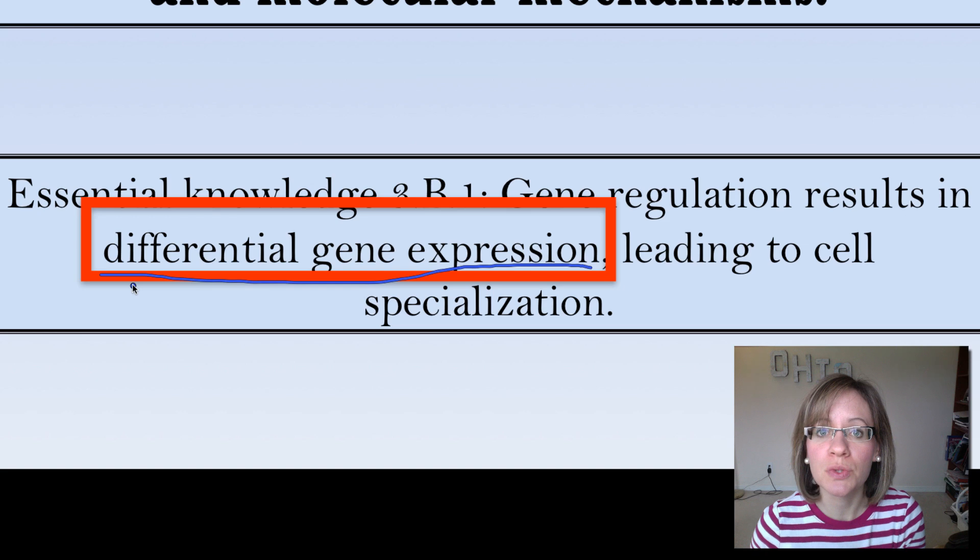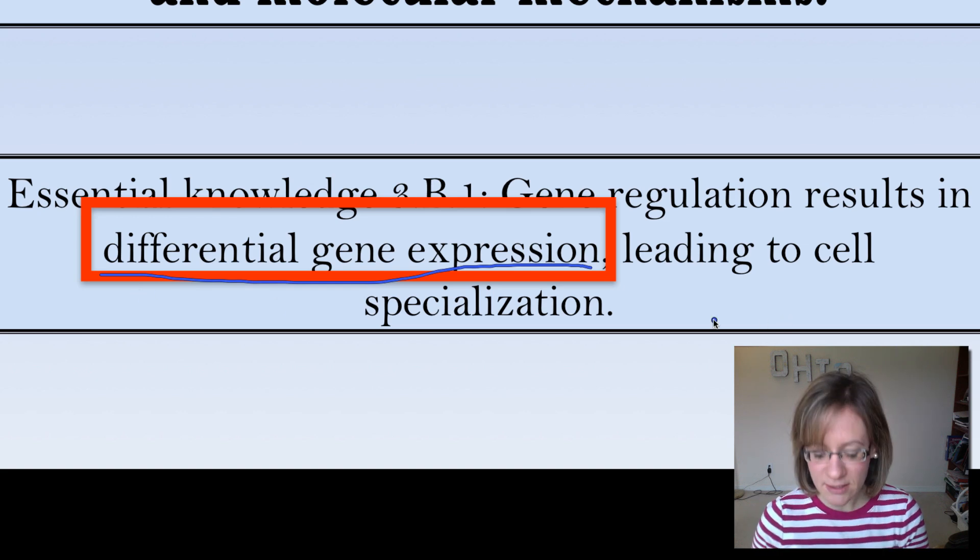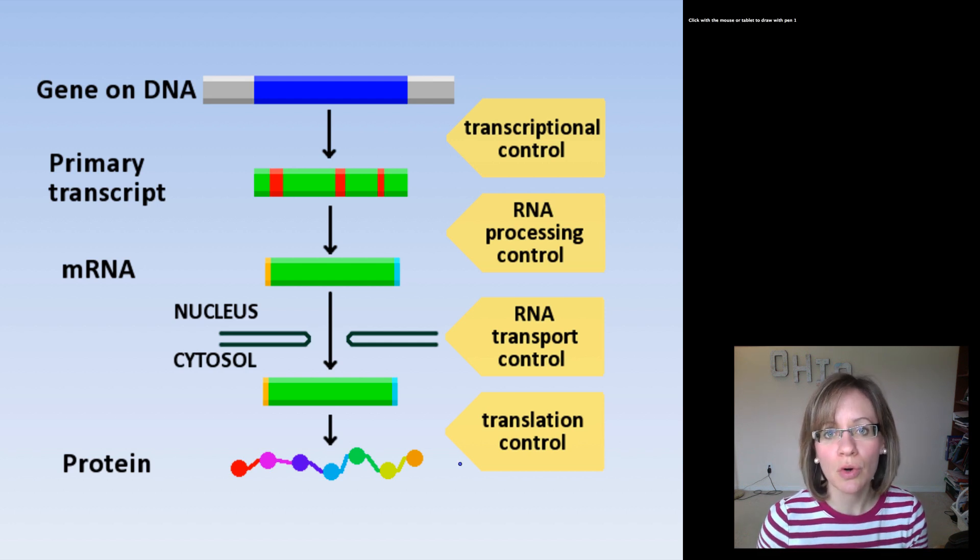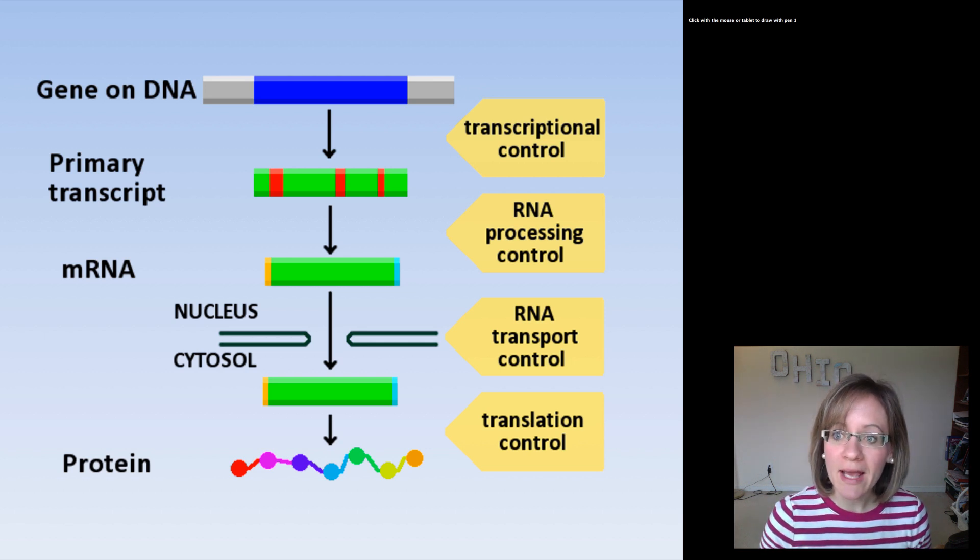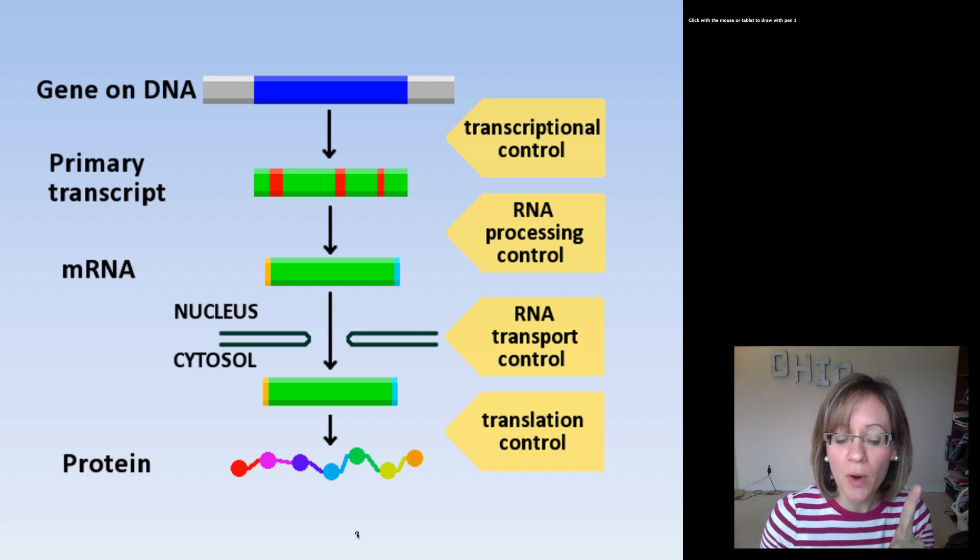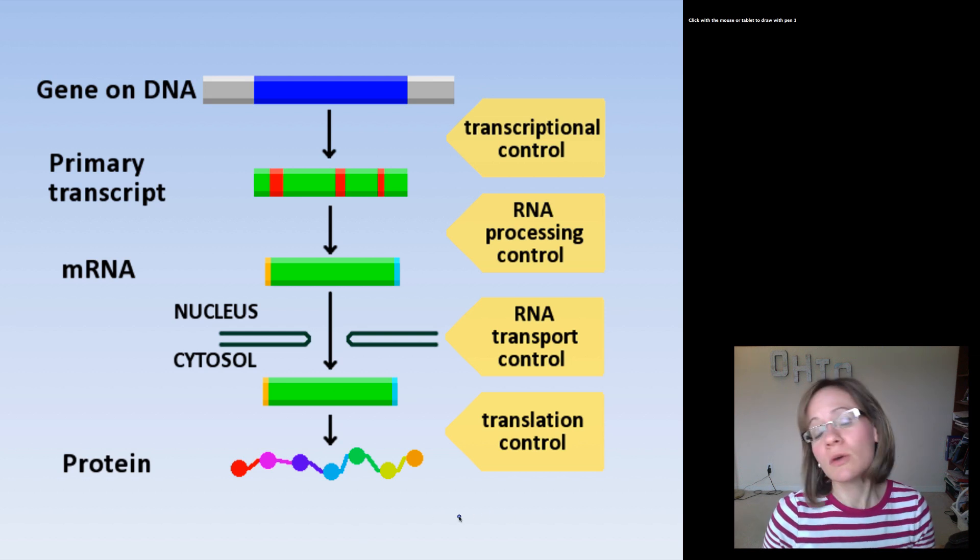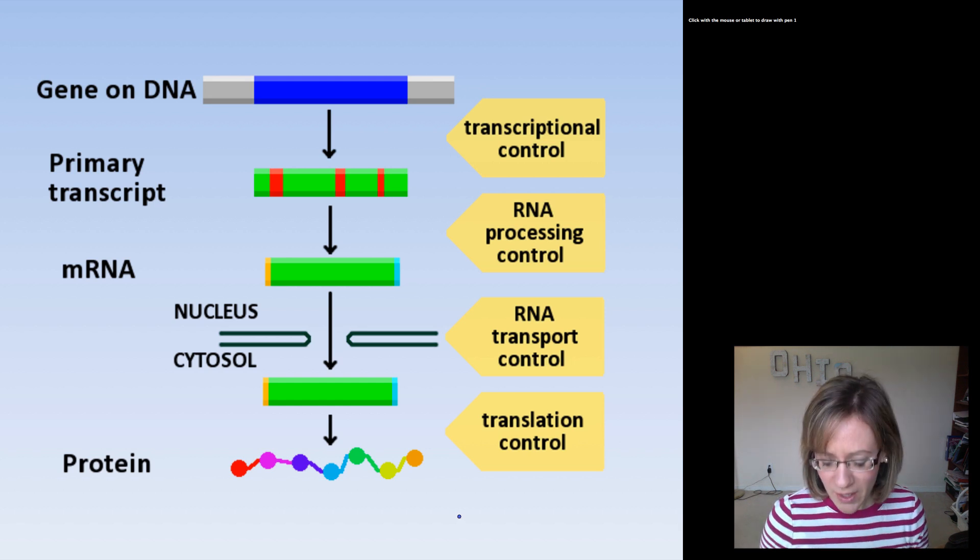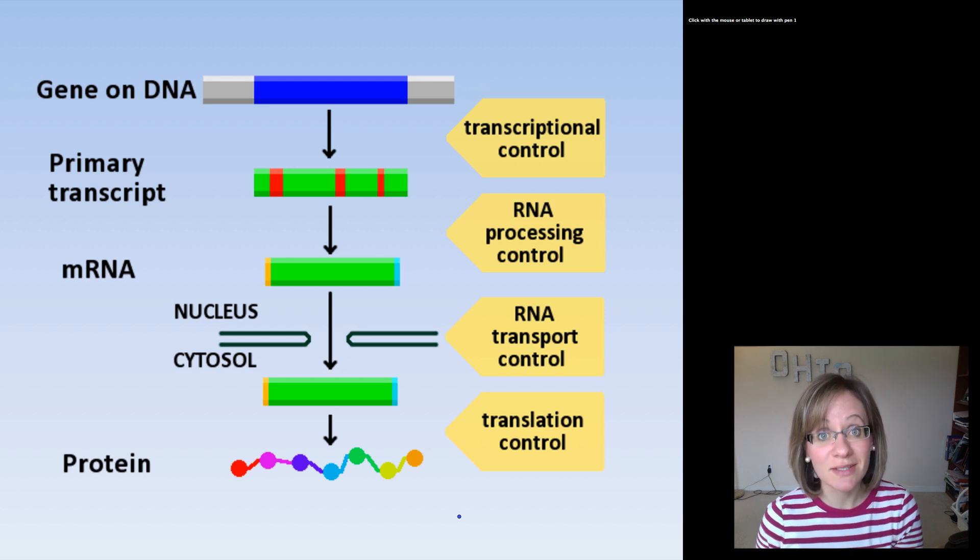Which genes get transcribed and which ones do not, this leads down the line to cell specialization. So there are all sorts of ways and levels at which eukaryotes can control gene expression. You can control it right away at the transcription level, regulating what gets transcribed. You can regulate exon shuffling, so you can regulate what you determine as an intron versus an exon. You can even regulate what gets exported out of the nucleus and you can regulate how it's translated. And once the protein is made, you can actually then modify the protein and change its shape which can therefore change its function. So lots of different ways and areas where we can regulate differential gene expression and cell function.